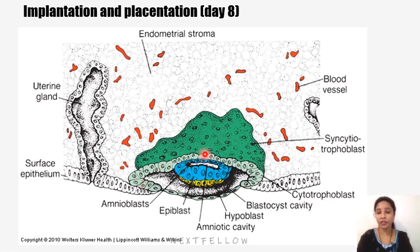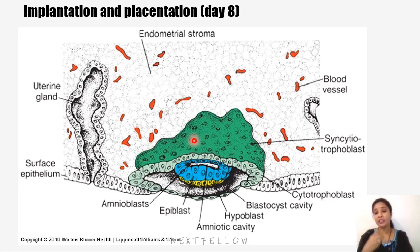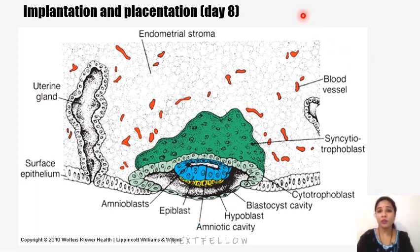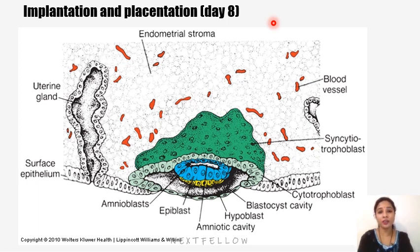The syncytiotrophoblast is more developed on the side of the embryo facing the endometrium, at the site of implantation, toward the embryoblast cells — this is called the embryonic pole, and the opposite end is the abembryonic pole. The cytotrophoblast is the inner actively proliferating layer, while the outer syncytiotrophoblast erodes the maternal tissues by day 9. Gaps called lacunae then start developing within the syncytiotrophoblast, and primary chorionic villi begin to form.